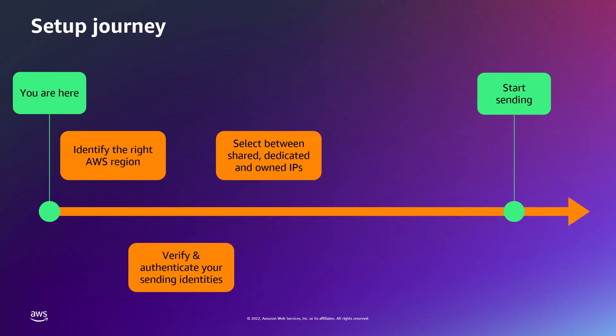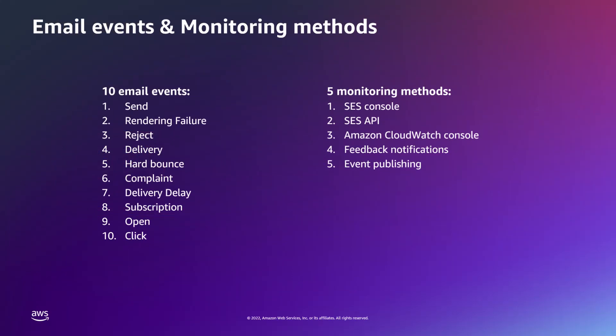Choosing the right type of IPs depends on the type, volume and patterns of emails that you send. The fourth step is about monitoring. SES currently tracks 10 email events and offers 5 different monitoring methods: the SES Console, SES API, Amazon CloudWatch Console, Feedback Notifications, and Event Publishing. These monitoring methods assist you in keeping track of important measures such as your account's bounce, complaint and reject rates.